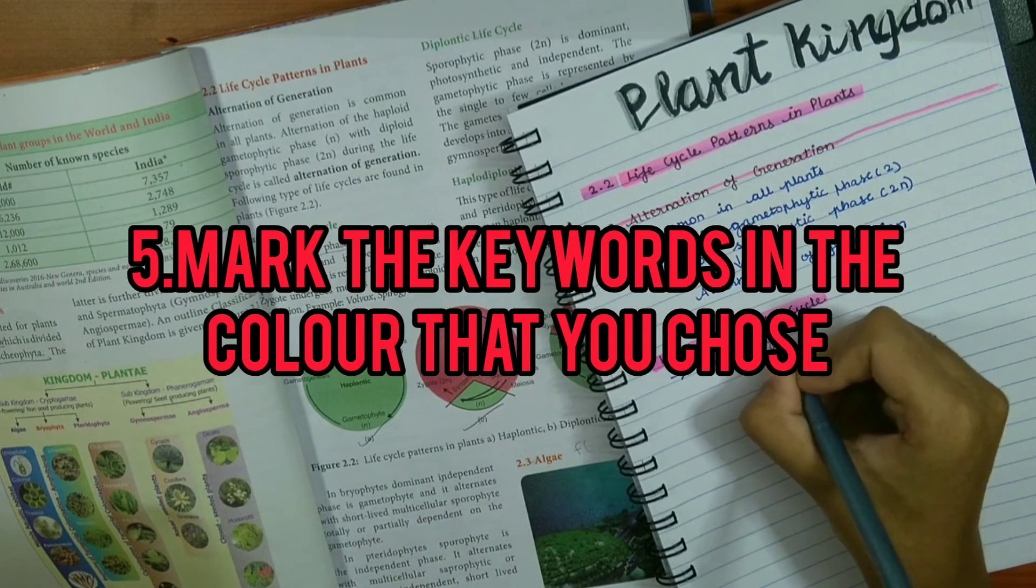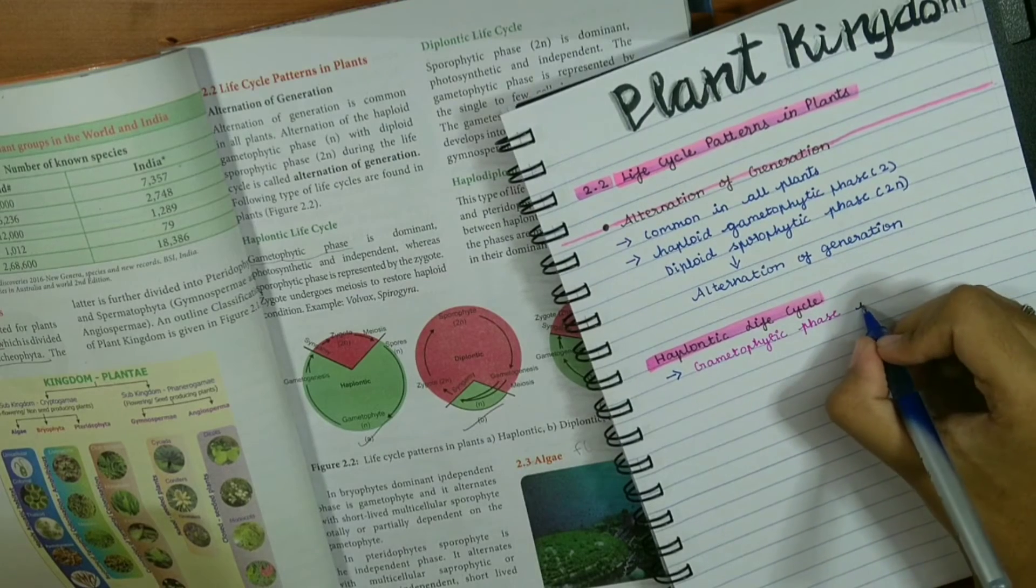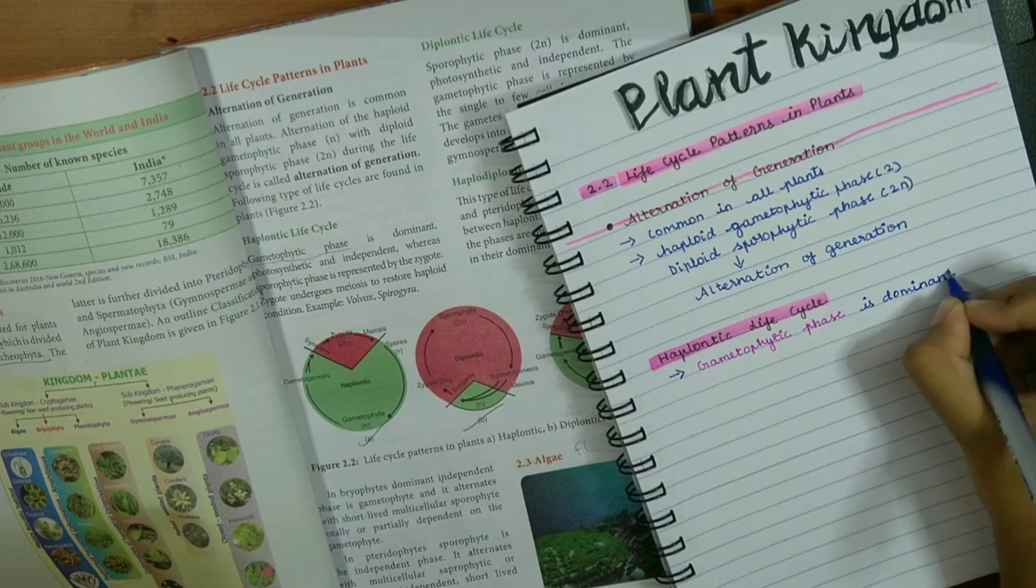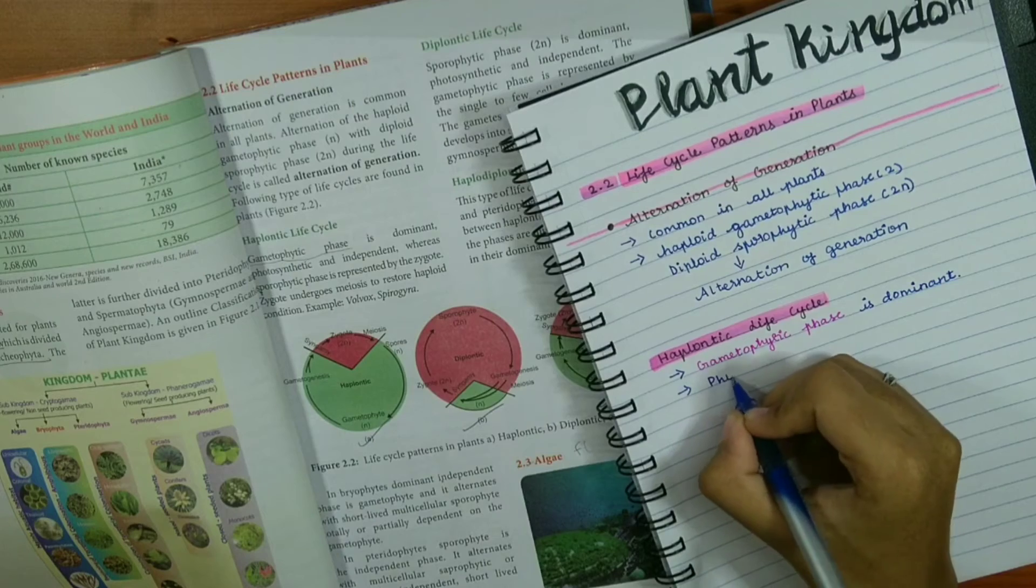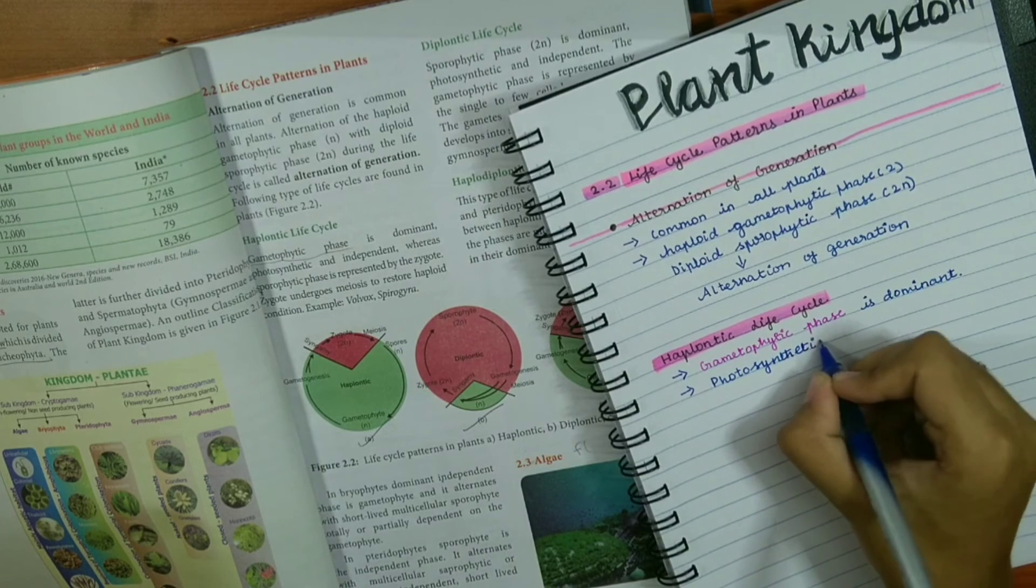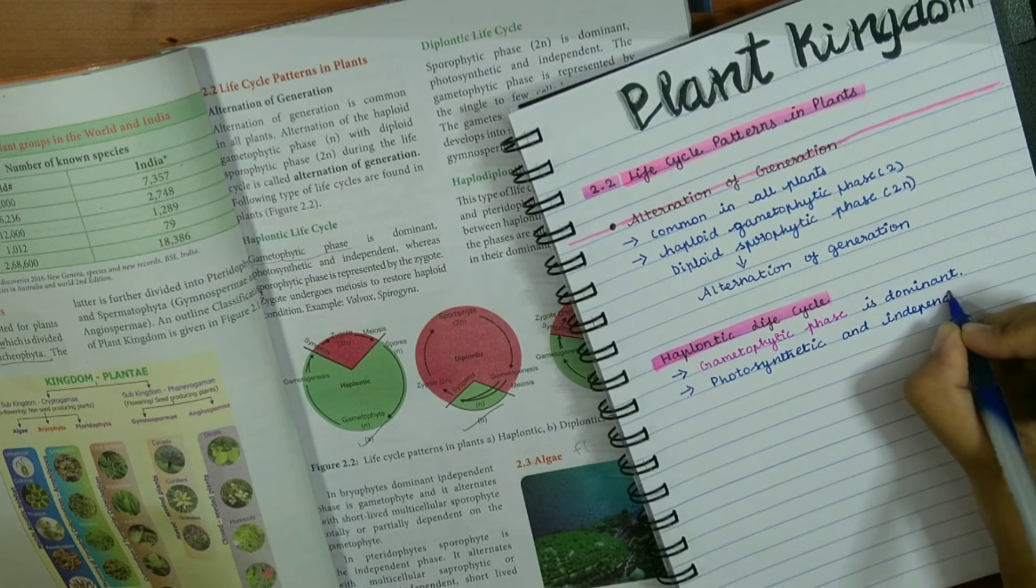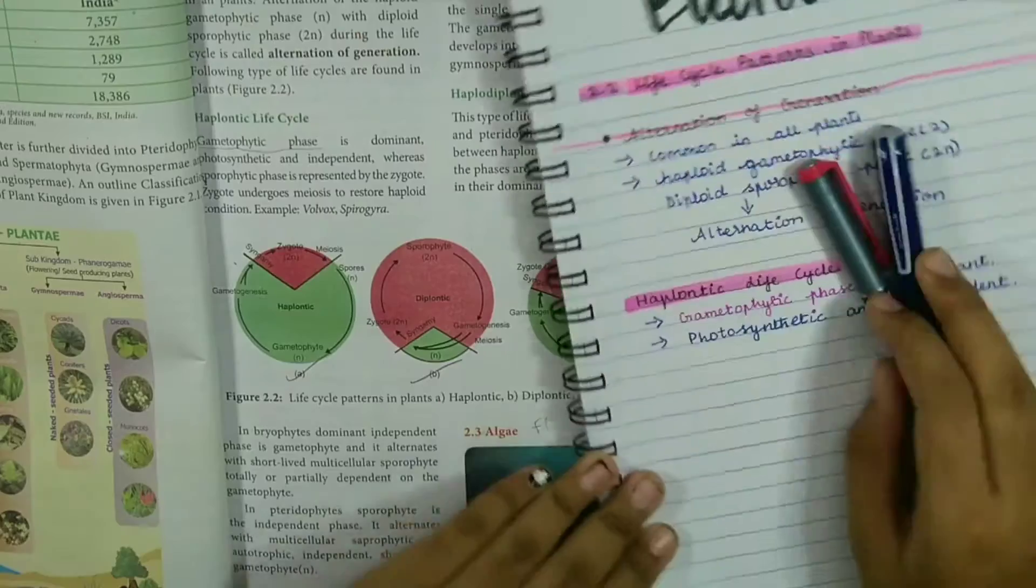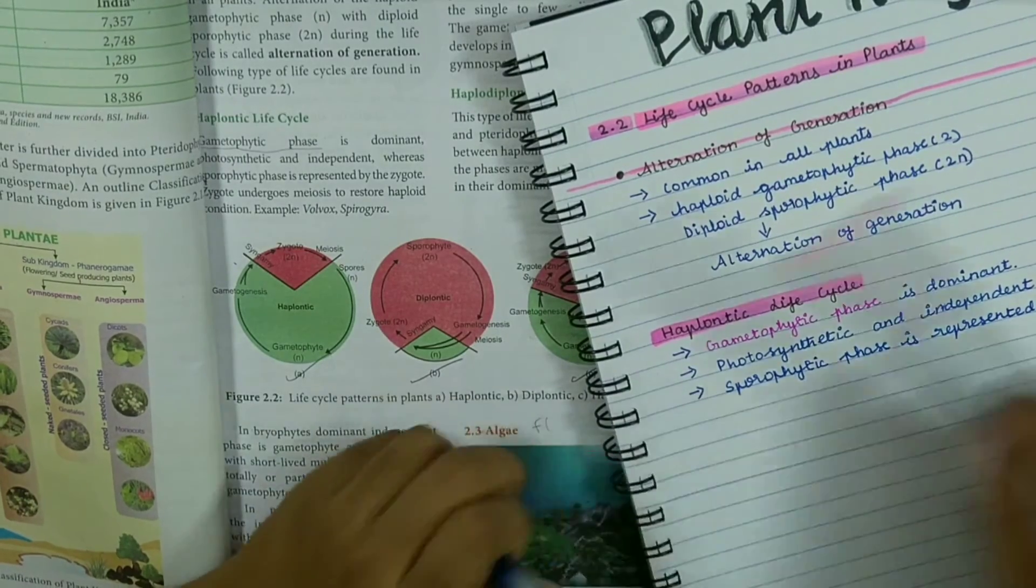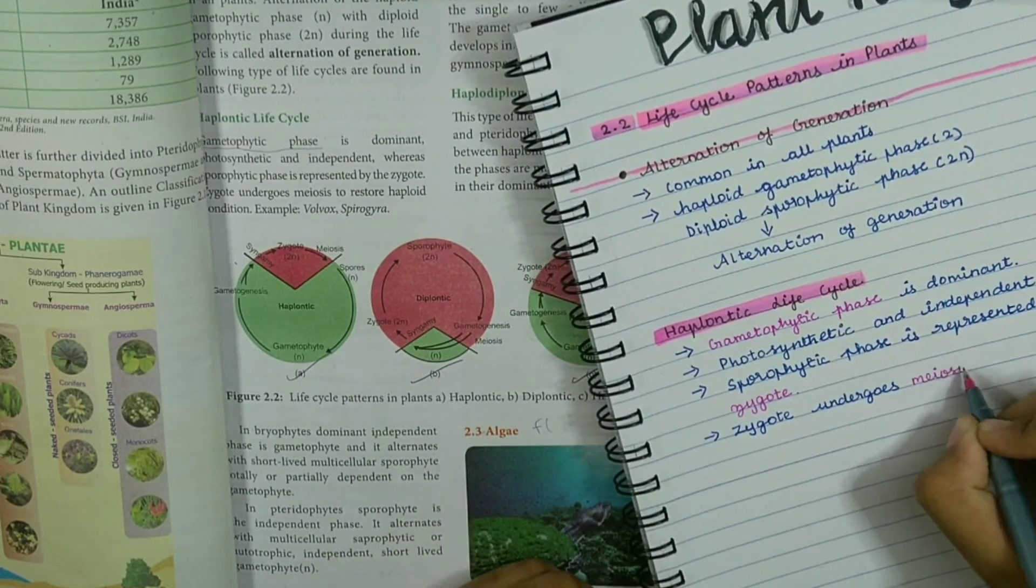You're going to write the keywords in the color pen that you've chosen for the chapter. As I've chosen pink for this chapter, I'm using my pink stick pen to write the keywords. It's really important to color-code the keywords so that while you revise, you see the words and can identify the definitions. I'm using arrows to write the points, which gives it a neat look. You can even use bullet points or whatever you want.